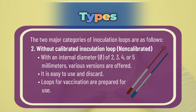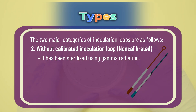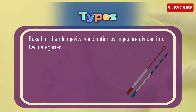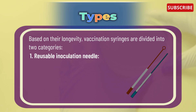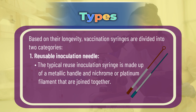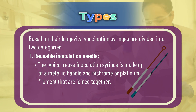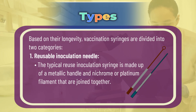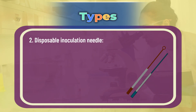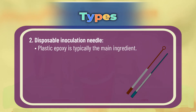Disposable loops for inoculation are prepared for use and have been sterilized using gamma radiation. Based on longevity, inoculation needles are divided into two categories: number one, the reusable inoculation needle, which is typically made up of a metallic handle with nichrome or platinum filament joined together; and number two, the disposable inoculation needle, where plastic epoxy is typically the main ingredient.